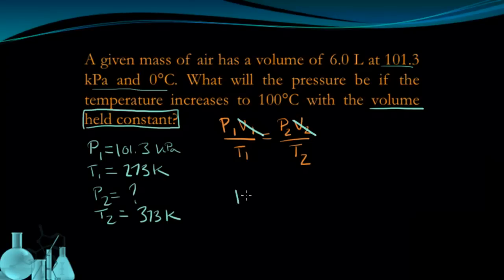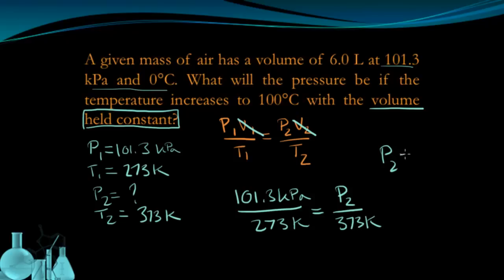Now I can go ahead and just plug in my variables. 101.3 kPa is my initial pressure divided by 273 Kelvin, equals P2, which I don't know, over 373 Kelvin. Solving for P2 is going to give me 138.4 kPa. So this trick of removing the variable that's held constant allowed me to solve this problem much more quickly, because I had to go through less identification of variables.